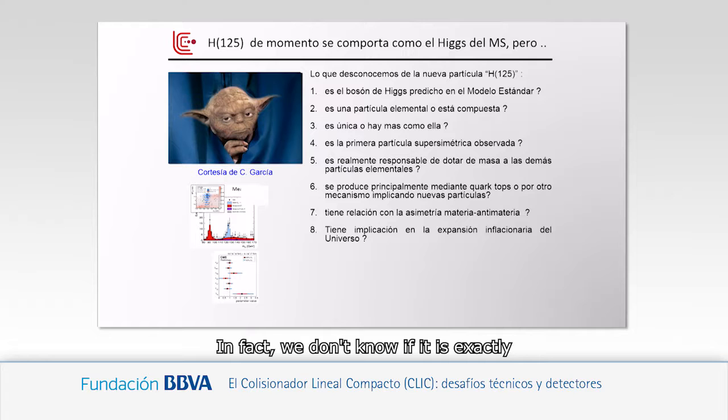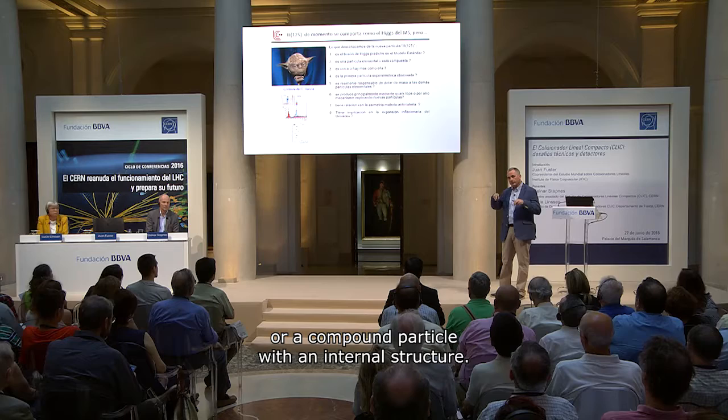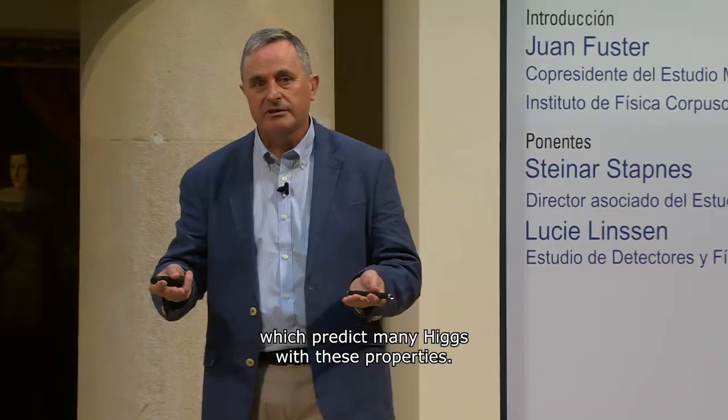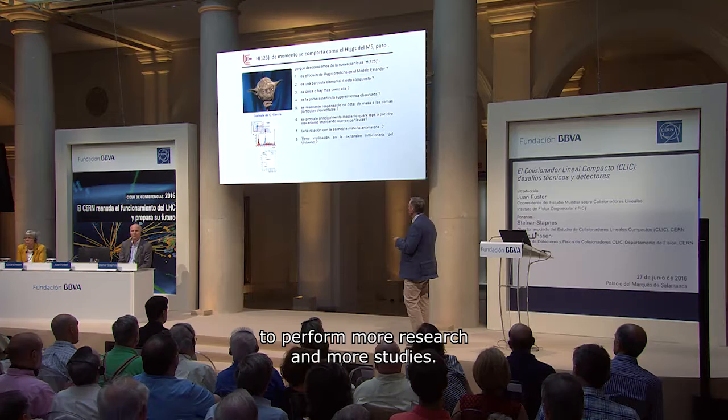We don't know if it is exactly the Higgs predicted by the standard model. We don't know if it is an elementary or composite particle with an internal structure. We don't know if it is unique or if there are more Higgs bosons — theories such as supersymmetry predict many Higgs particles. So we may have discovered the first supersymmetric Higgs, and for that we need more research.